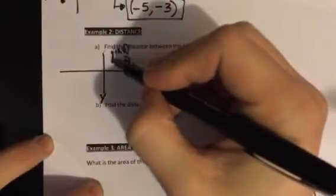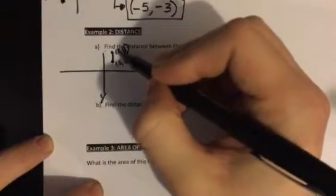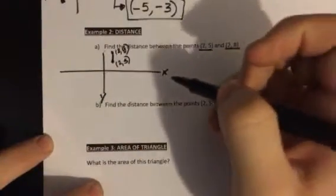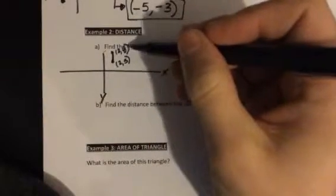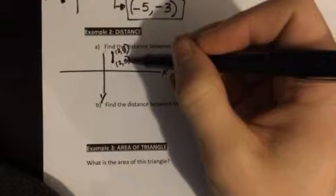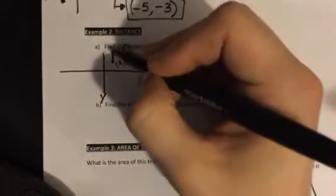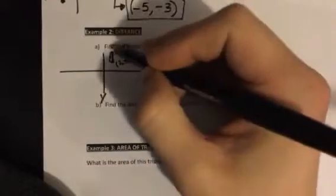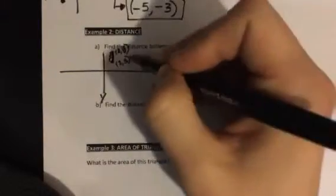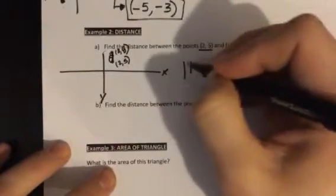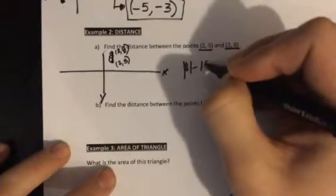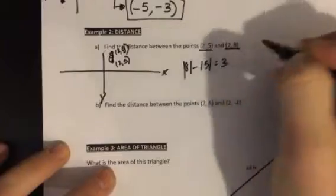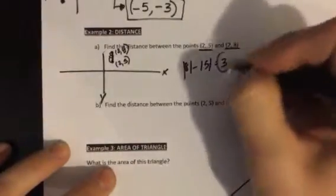You can see this makes a vertical line straight up and down. You can also see, since this one is at eight and this one is at five, we can count three spaces. One, two, three. So that would be the distance of this line. We can subtract the absolute values of eight and five. That gives us a distance of three spaces.